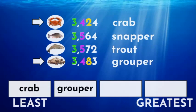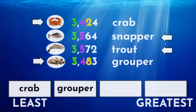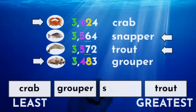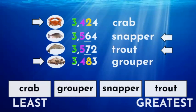Next, we need to compare the trout and snapper to find out which has the greatest value. Since both have a three in the thousands and a five in the hundreds, we must compare the tens place again. The trout has the greatest value since seven is greater than six. That leaves the snapper as the next greatest, and we have completed our ordering.